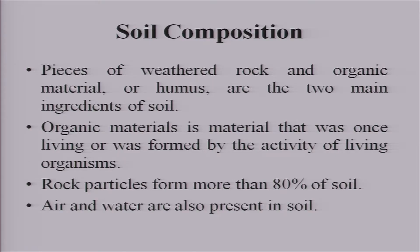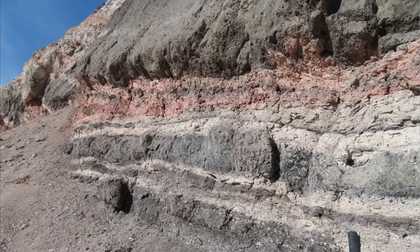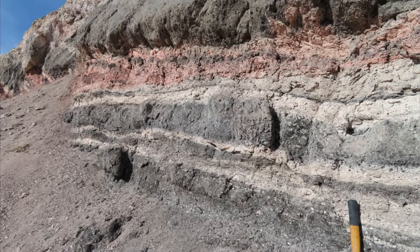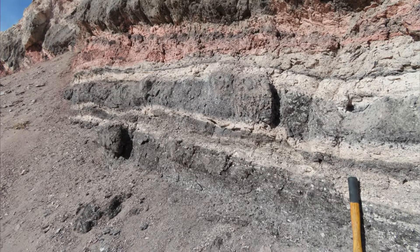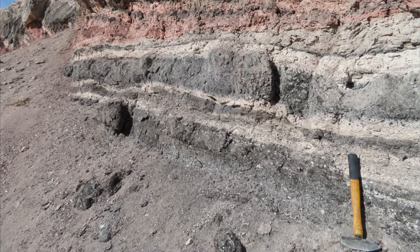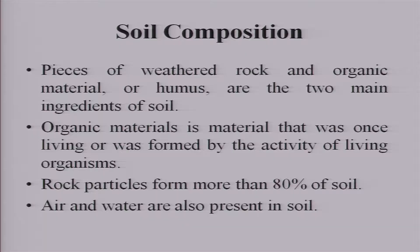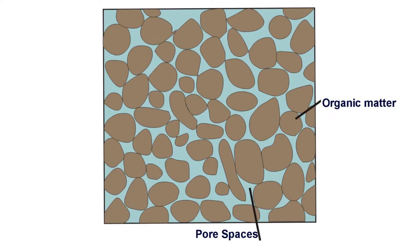Looking at soil composition, it consists of pieces of weathered rock and organic material, or humus — the two main ingredients of soil. Organic material is formed from living organisms, and rock particles come from weathering of rocks. More than 80 percent of the soil is weathering product, that is the rock particles. The rock particles and humus have pores, and in these pores air and water occupy the spaces.